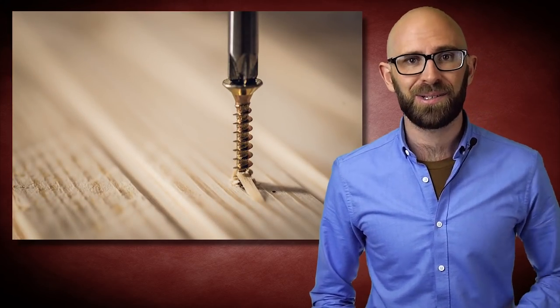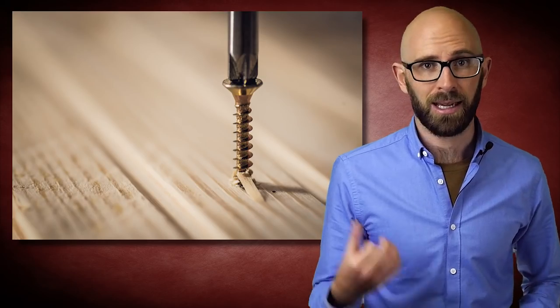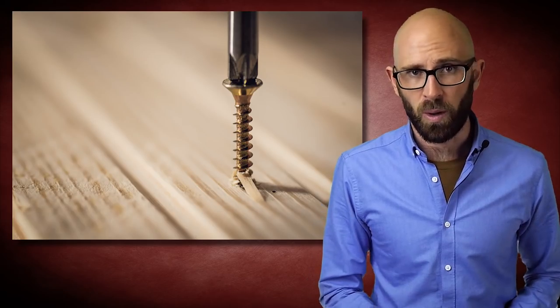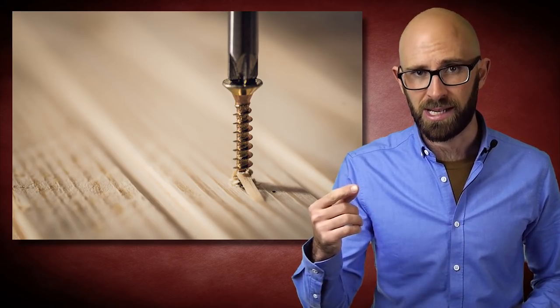One of the so-called six classical simple machines—the others being the inclined plane, the lever, the pulley, the wedge, and the wheel and axle—a screw is nothing more than an inclined plane wrapped around a center pole.